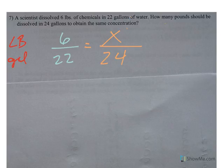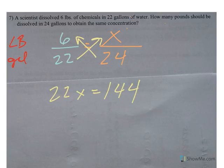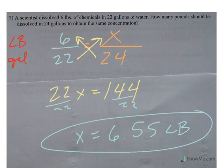So I cross multiply. 22x equals 6 times 24 is 144. I'm going to divide both sides by the 22, and I get approximately 6.55 pounds of chemicals to keep that same concentration. It makes sense it should be bigger, right? 22 to 24 got bigger, 6 should get slightly bigger.